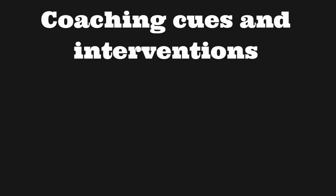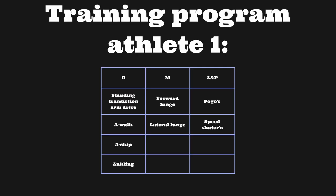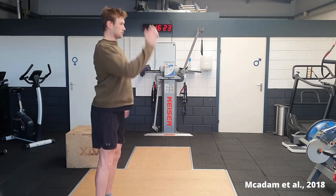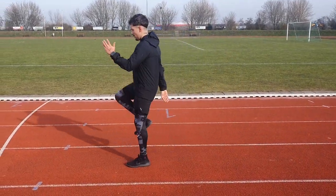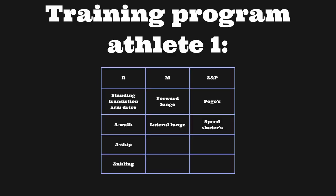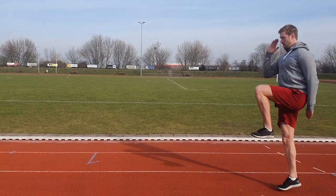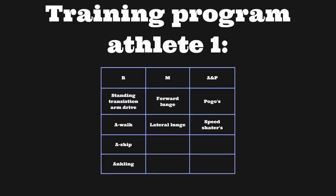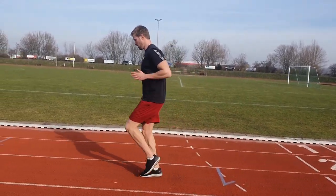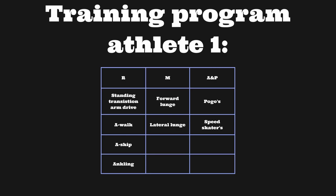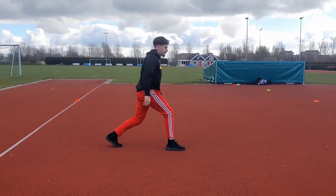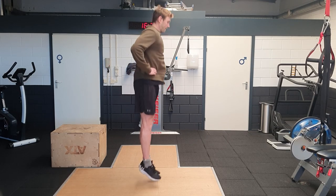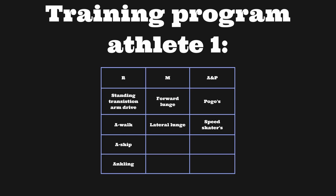Now we look at the coaching cues and interventions. For Athlete 1, I've made a training program. The ramp warmup starts with the standing transition arm drive to improve arm drive technique and rate-of-rise rhythm. Next is the A-Walk, where we want to see balance, feet forward, and a stiff torso. Then the A-Skip, reinforcing correct arm mechanics from the shoulder — not the elbow — and double leg contact with the grounded leg. We use ankling for tendon stiffness and to stay on the ball of the foot with the ankle dorsiflexed. Forward and lateral lunges are precursor drills for acceleration and change of direction, and pogo jumps reinforce musculotendon stiffness. Speed skaters help prepare for lateral braking forces during change of direction movements.